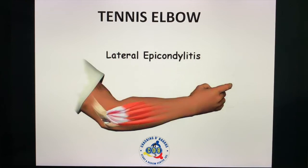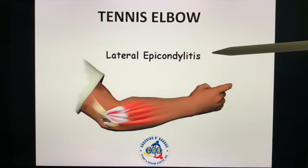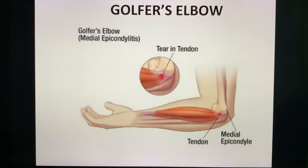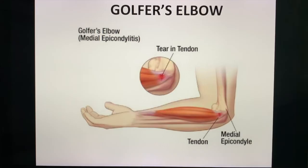We have the famous tennis elbow, which we call lateral epicondylitis, and its counterpart the golfer's elbow, which is medial epicondylitis. Tennis elbow is lateral epicondylitis, while golfer's elbow is medial epicondylitis.